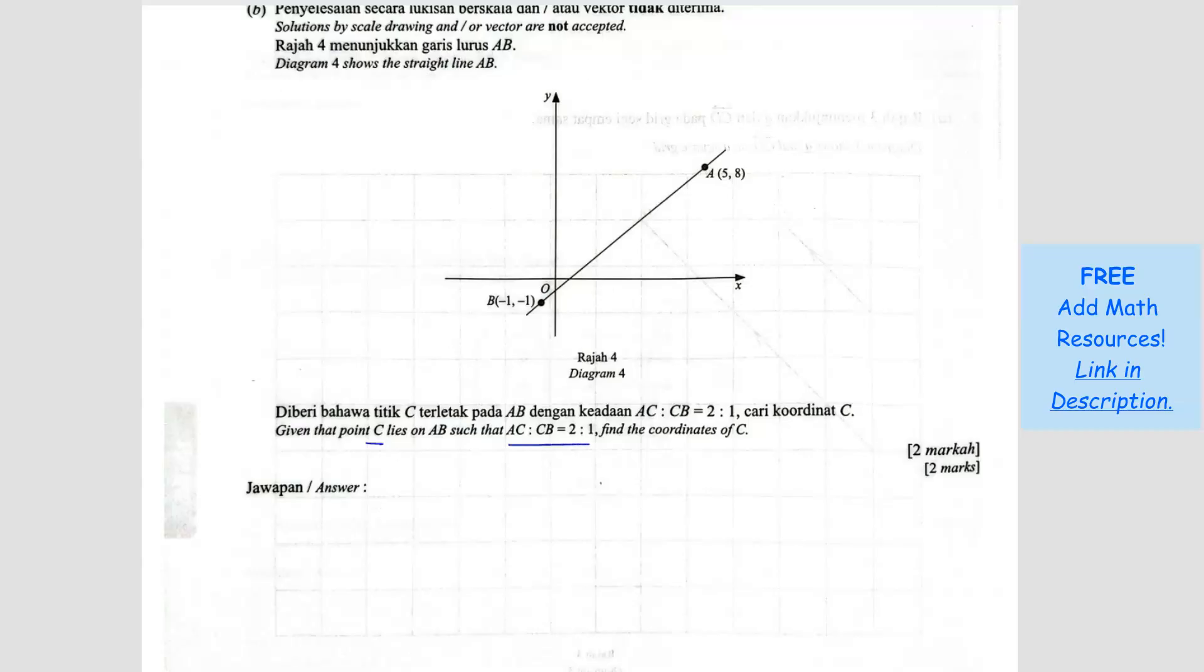So we've got point C lies on AB. The ratio is AC to CB, 2 to 1. So A to C, let's say C is here. So A to C, the ratio is 2. C to B, the ratio is 1. Find the coordinate C.